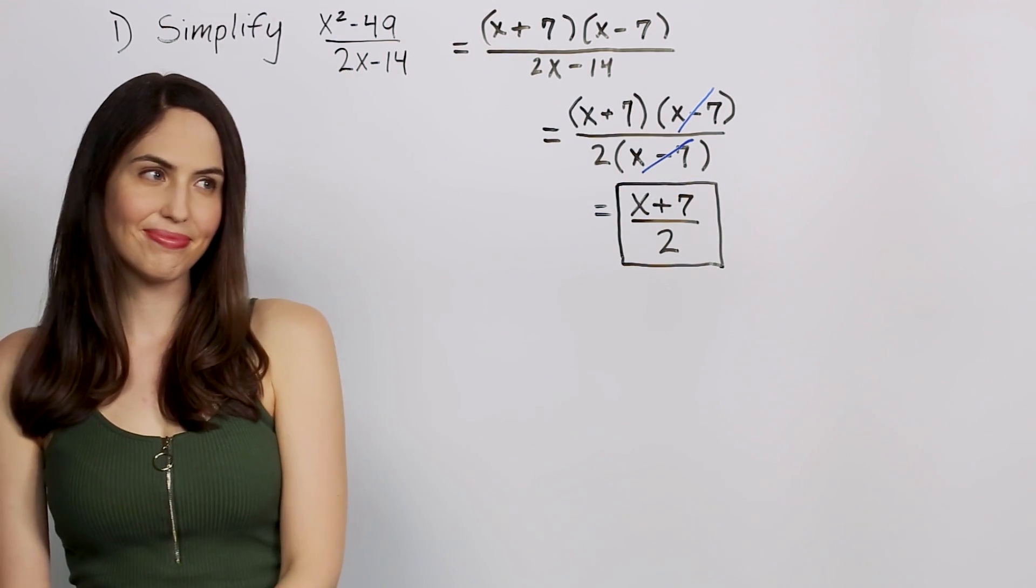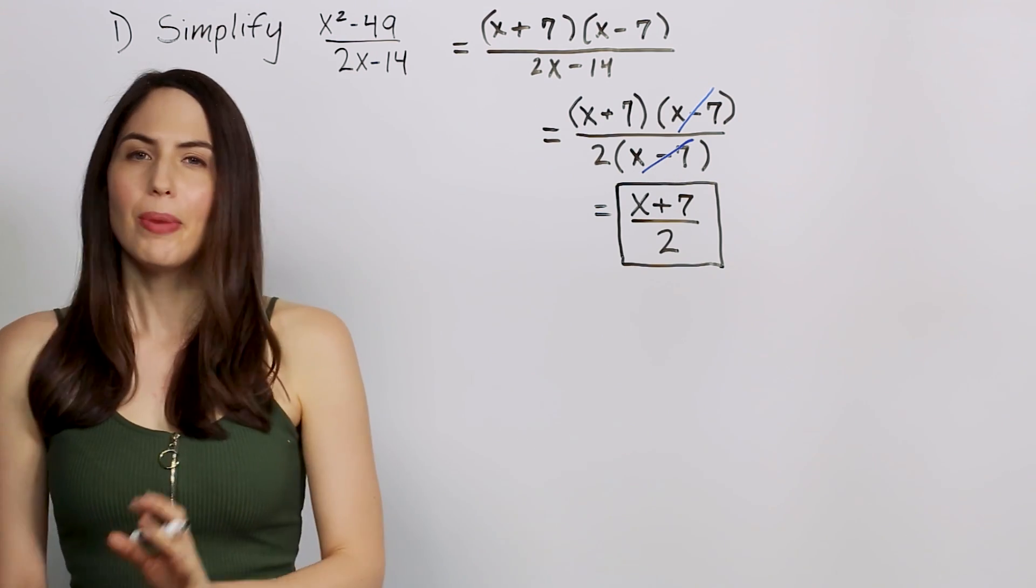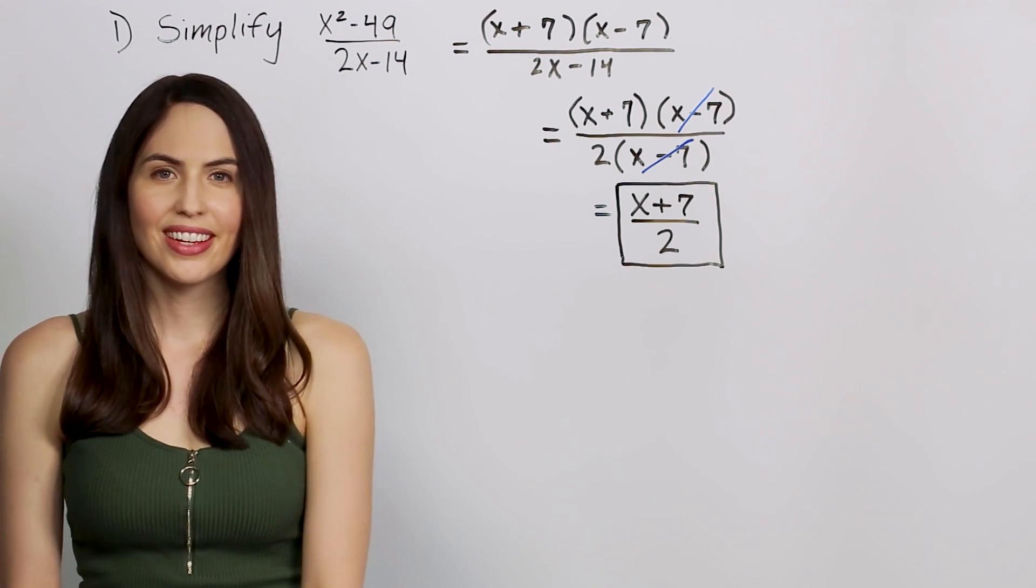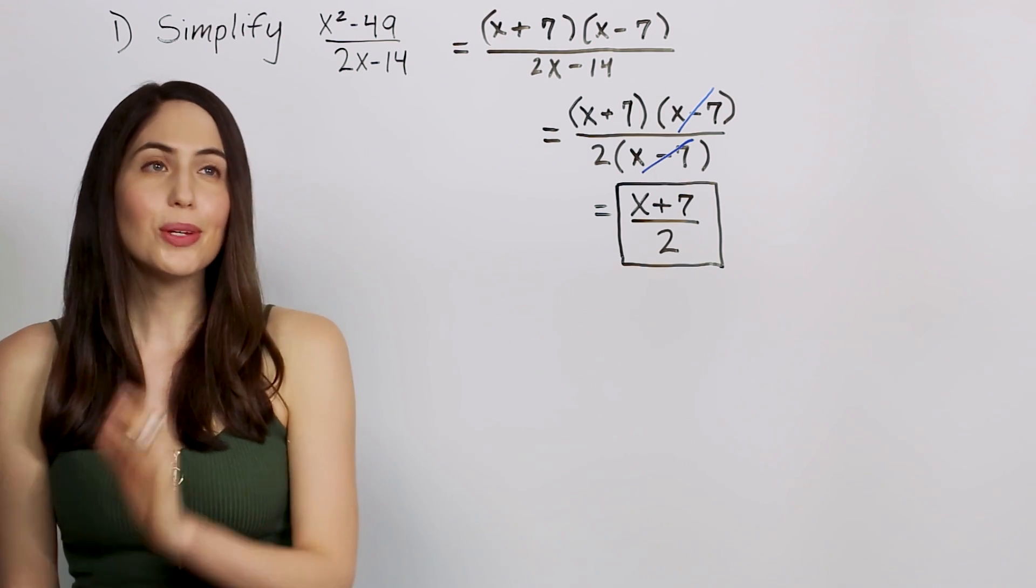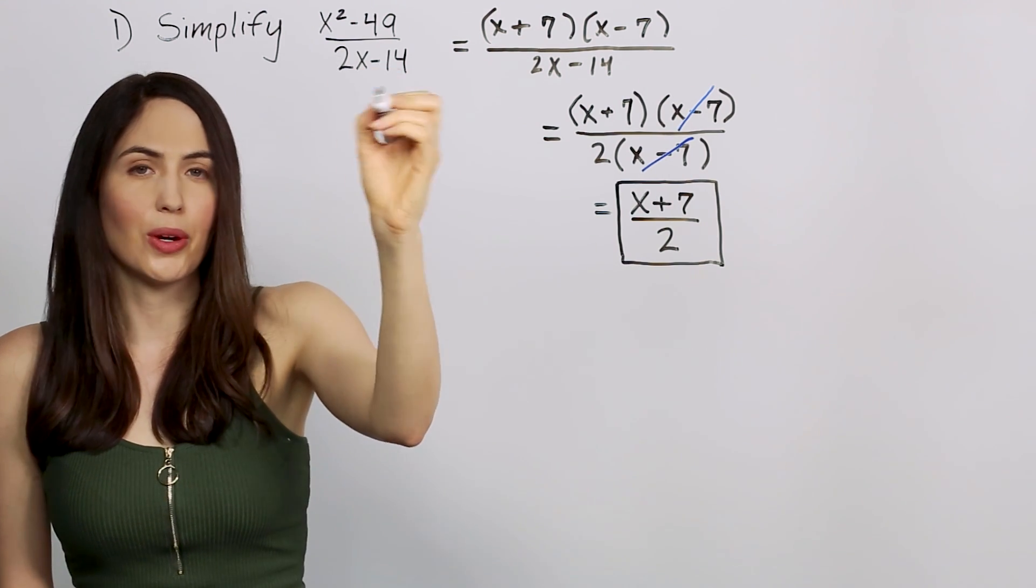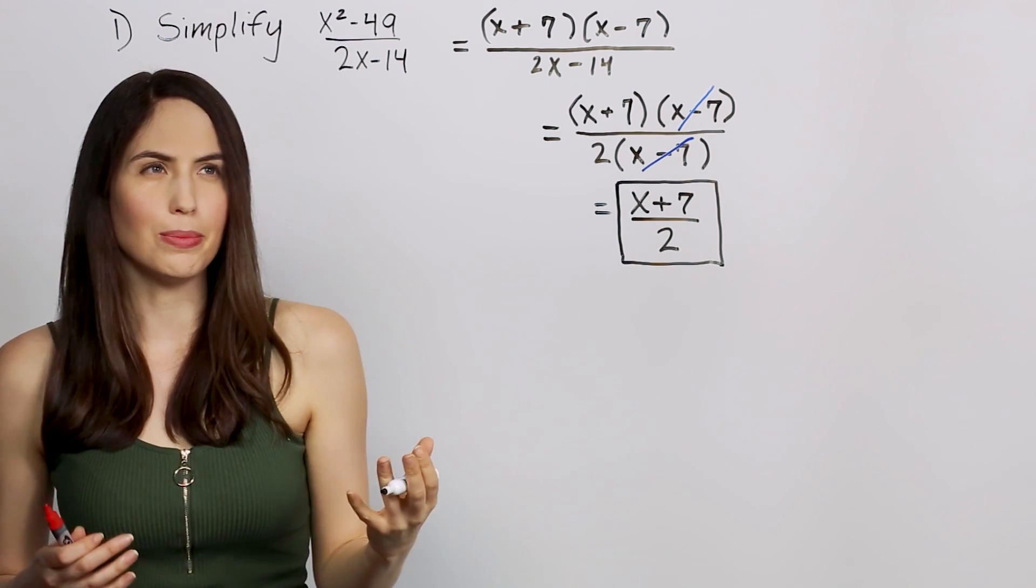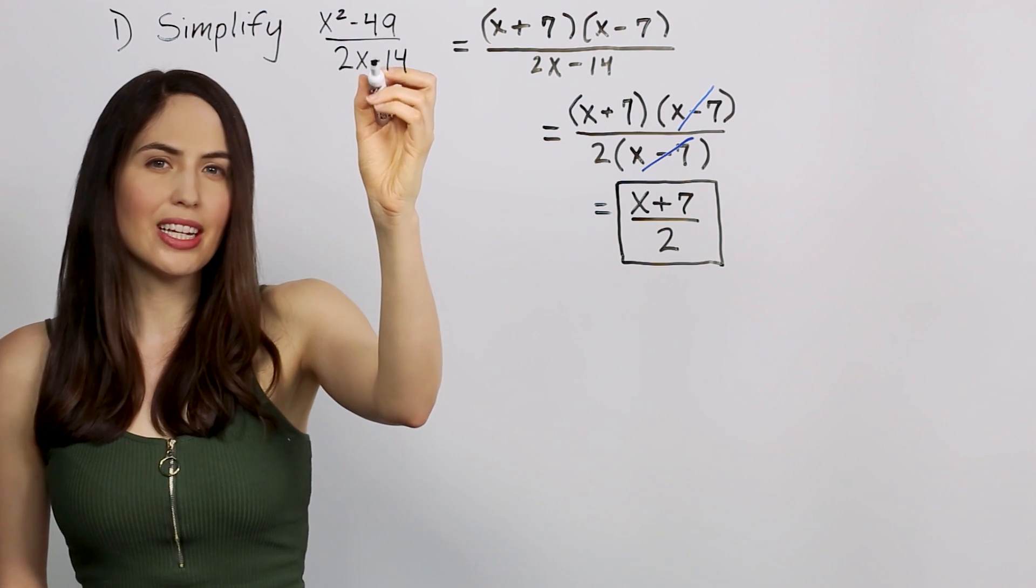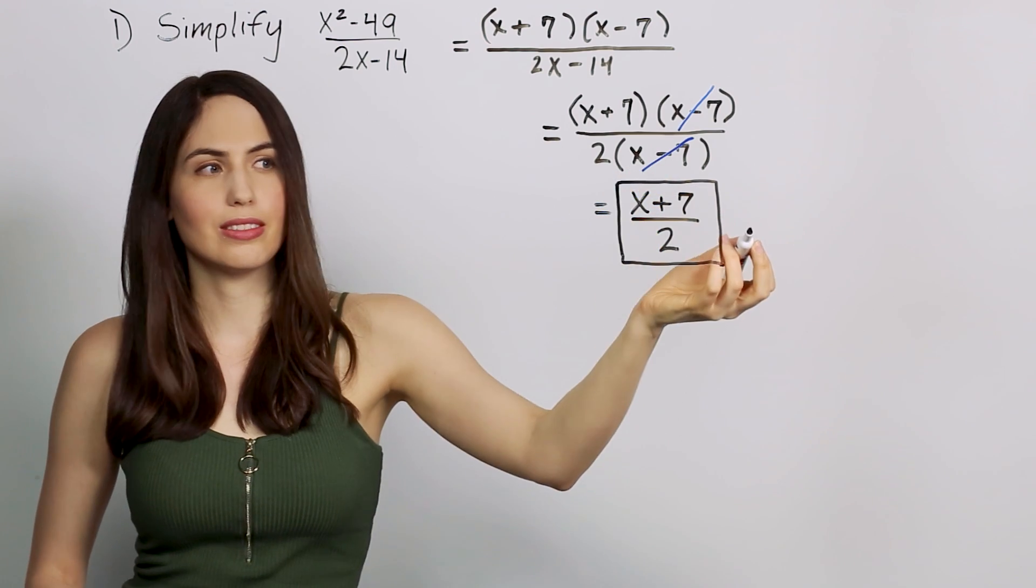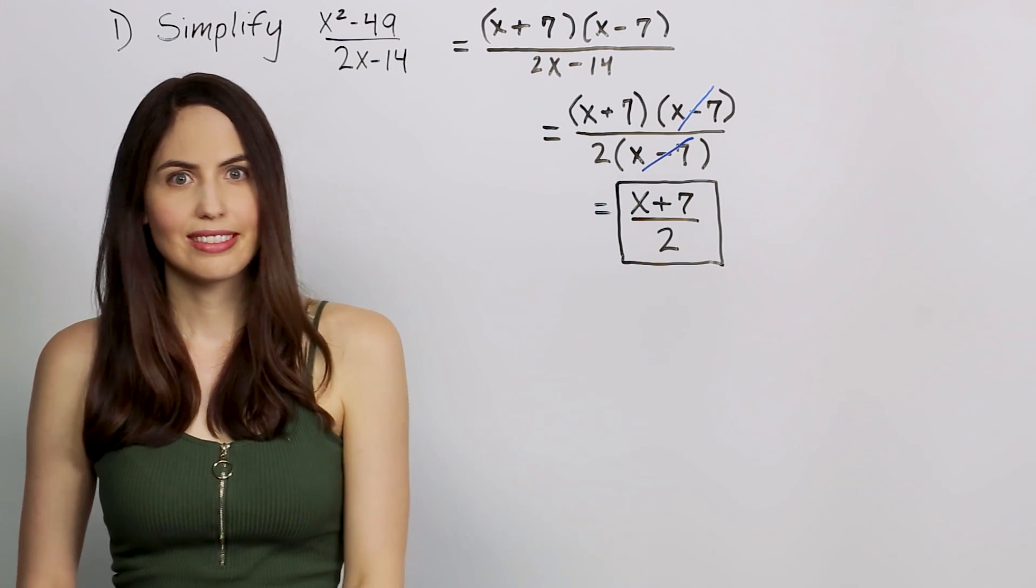So that's the answer, right? Part of me wants to just stop right there and not say anything else, but that would be irresponsible of me. So just notice something. If we tried to plug in 7 for x, we'd get 0 in the bottom. 14 minus 14, 0 in the denominator. Division by 0 is undefined. It's a problem. So it was clear in the beginning we couldn't plug in 7. But in the end, in our answer, if you plug in 7, it's just fine. Get a normal number. 14 over 2 is 7. You don't get division by 0 or undefined. So what happened?